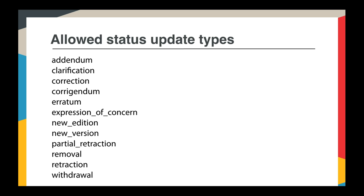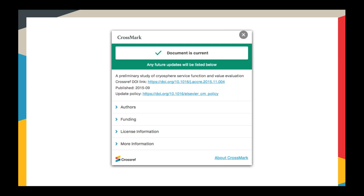This kind of minor information can be added to the Crossmark box in the More Information section. In terms of the actual status update, if you use a term not included on the list of 12 types, the Crossmark section of the deposit will be rejected. The status update is a really important part of Crossmark, but it's much more than that — it's an opportunity for a publisher to showcase a huge wealth of additional metadata.